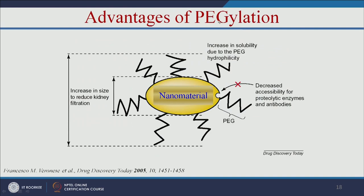The advantages of PEGylation — adding polyethylene glycol to the nanomaterial — include: increased size to reduce kidney filtration, increased solubility due to PEG hydrophilicity, and decreased accessibility of proteolytic enzymes and antibodies. It protects the nanomaterial from the immune system and reduces filtration by the kidney.